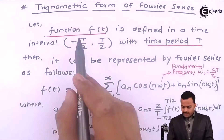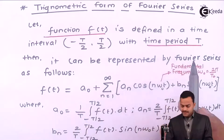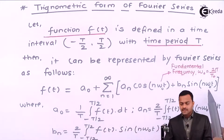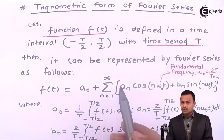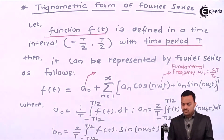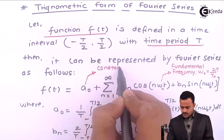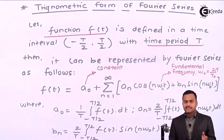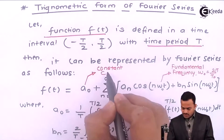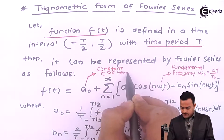Any function periodic with a time period T can be represented as the sum of sines and cosines along with this a0. This a0 is nothing but a constant — it is not associated with any sinusoids or cosines. Hence we call this as the DC term present in a Fourier series.